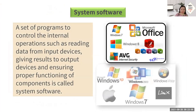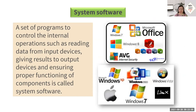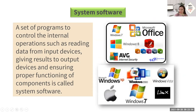When we say system software, it is a set of programs to control internal operations such as reading data from input devices, giving results to output devices, and ensuring proper functioning of components. Here are examples of system software — we have various operating systems: Windows 7, Windows 8, and I'm currently using Windows 10. AVG is also an example of system software. Others include Mac OS and Linux.